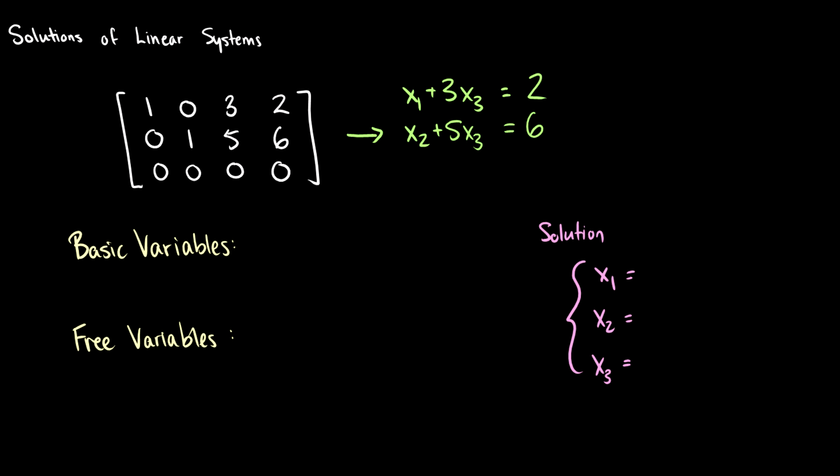So when we write this out, we have x1 plus 3x3 is equal to 2, and x2 plus 5x3 is equal to 6. Well, we can't really solve explicitly for these variables, because in both cases, we have this x3 that kind of dangles along with it.